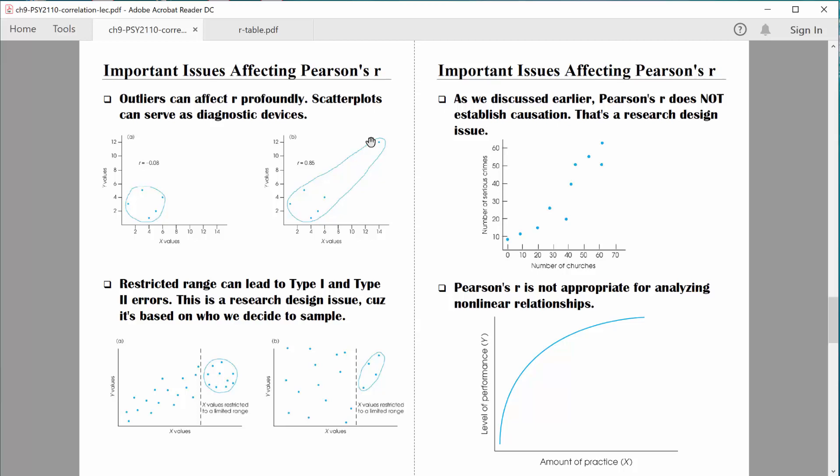Another issue that affects correlations is known as restricted range. And restricted range can lead to type 1 and type 2 errors. It's really mostly a research design issue because restricted range has to do with who you're actually studying, who you're measuring. And instead of getting a good representative sample from the entire population, sometimes your sample might be restricted such that only some people, some certain segment of that population is being measured. Let me give you an example.